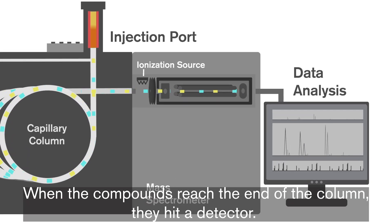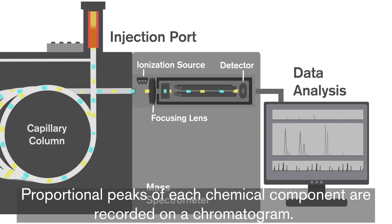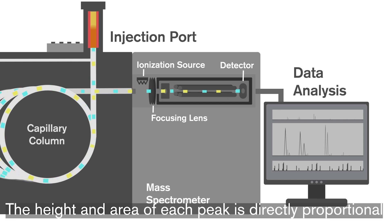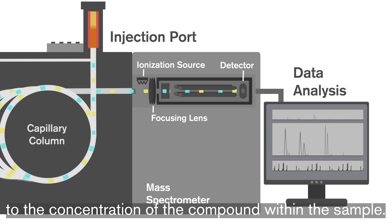When the compounds reach the end of the column, they hit a detector. Proportional peaks of each chemical component are recorded on a chromatogram. The height and area of each peak is directly proportional to the concentration of the compound within the sample.